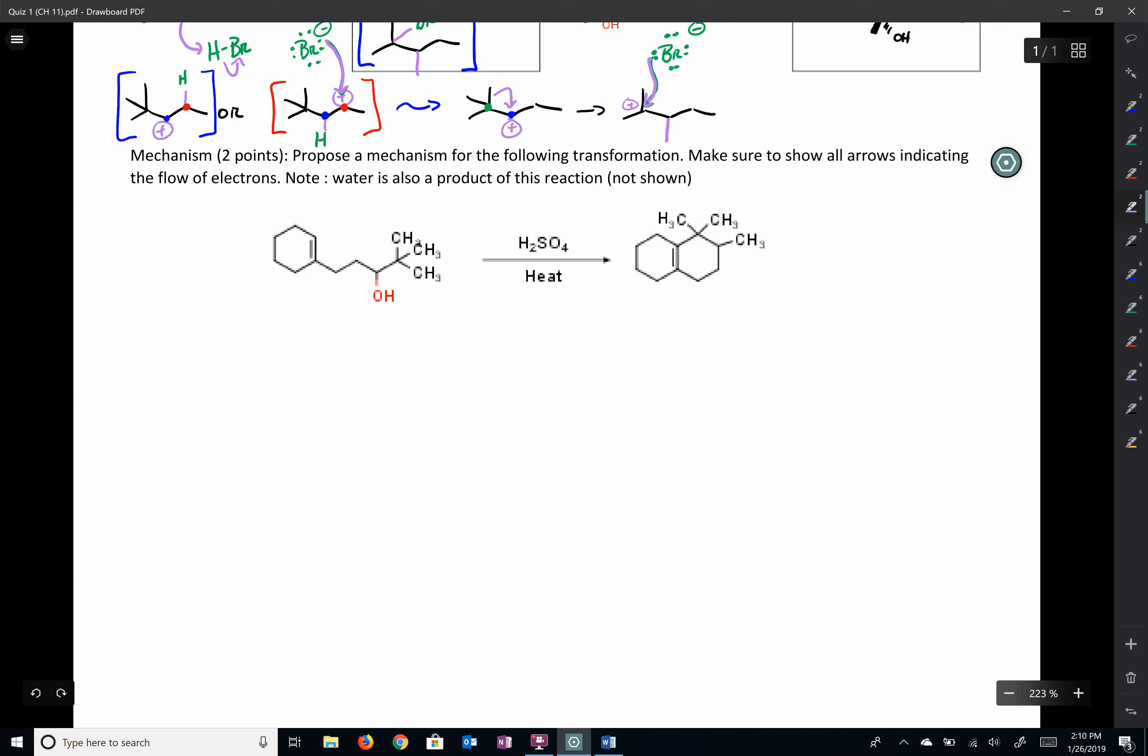So some things to identify. We have a strong acid, we have an alcohol, we have a double bond, we have some heat around. Here's something that's interesting, something to start to pick up. You've got methyl group, methyl group, methyl group. We see that the methyl groups all start on the same carbon here. We'll mark it in red. But then at the end of it, the methyl groups are in different carbons.